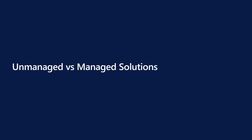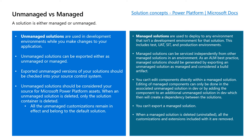Now that we have an understanding of what solutions are and how they can be used, let's take a closer look at unmanaged versus managed solutions. A solution is either managed or unmanaged. Unmanaged solutions are used in development environments where you make changes to your application. Unmanaged solutions can be exported as either unmanaged or managed. Exported unmanaged versions of the solution should be checked into source control — not just the zip file, but also the unpacked raw XML files. Unmanaged solutions should be considered your source of the Microsoft Power Platform assets. When an unmanaged solution is deleted, only the solution container is deleted, meaning the actual customizations will still be in effect in the default solution — deletion of an unmanaged solution will not delete the associated components.